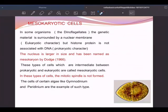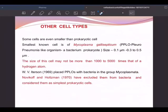Mesokaryotic: in some organisms like dinoflagellates, genetic material is surrounded by nuclear membrane, that's eukaryotic character, but histone protein is not associated with DNA. That's why we are saying in between. So the nucleus is larger in size and has been named as mesokaryotic. So there are three types now of cell types.